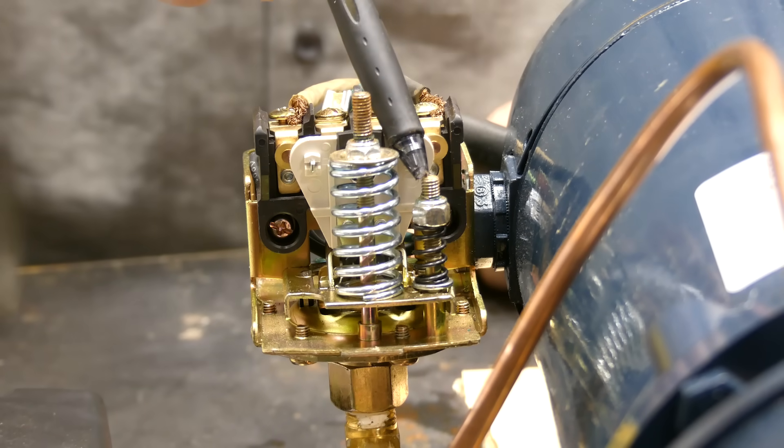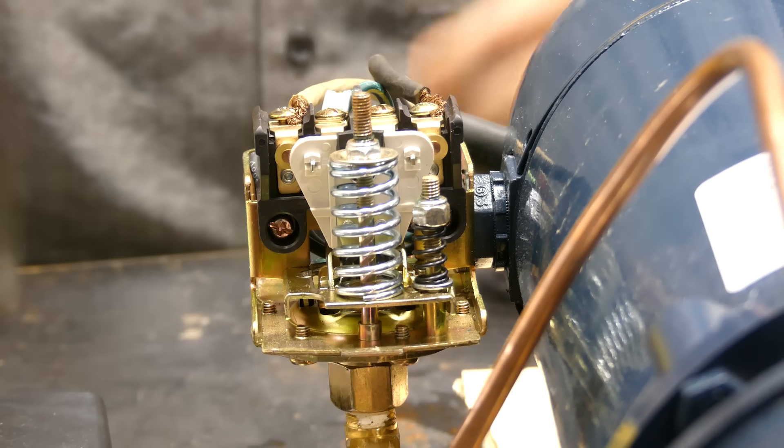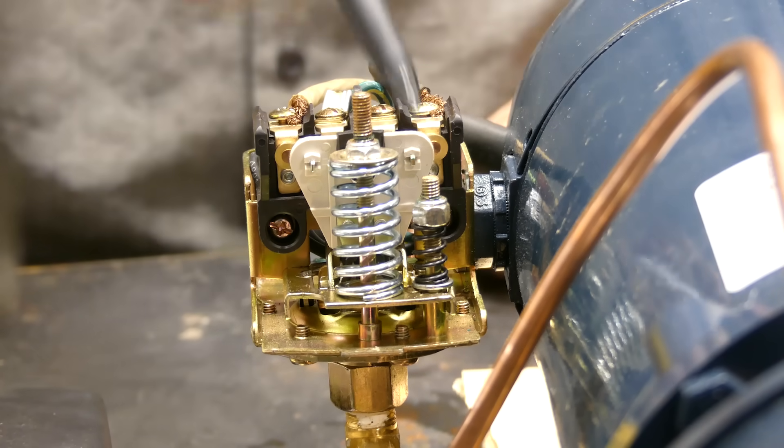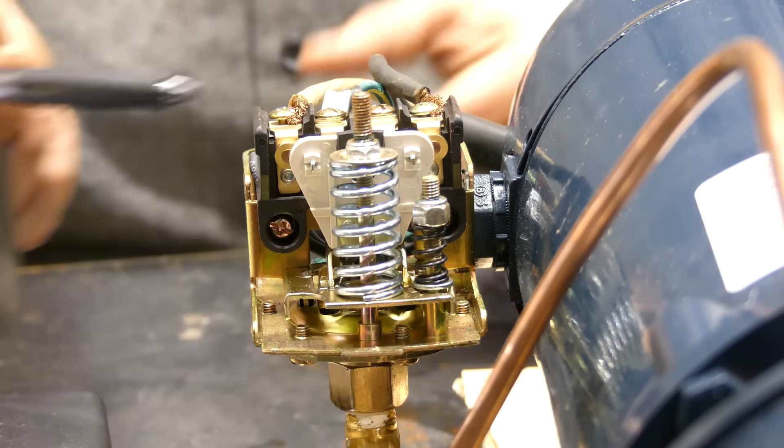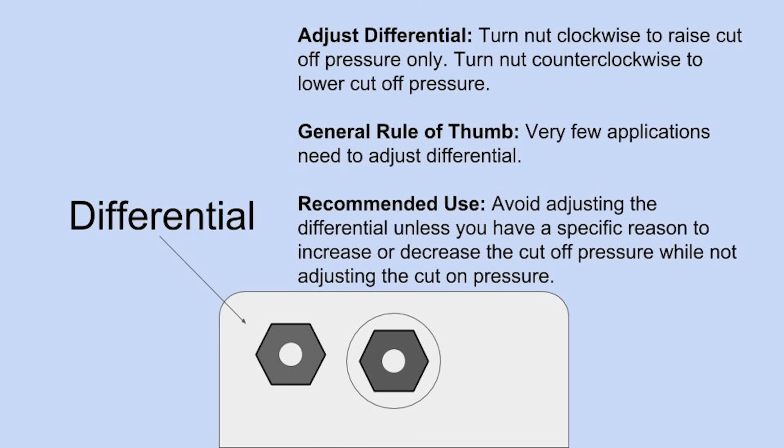The smaller nut on the left hand side adjusts the differential, which actually only affects the high end pressure. So for example, on this 30/50 configuration, if I were to tighten this or go clockwise, we would be increasing the 50.